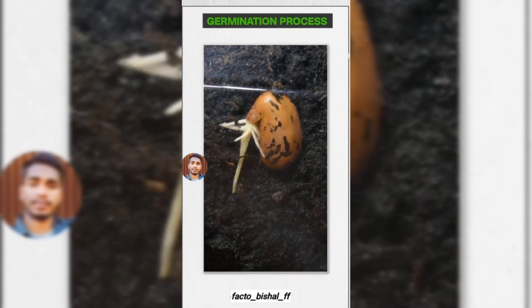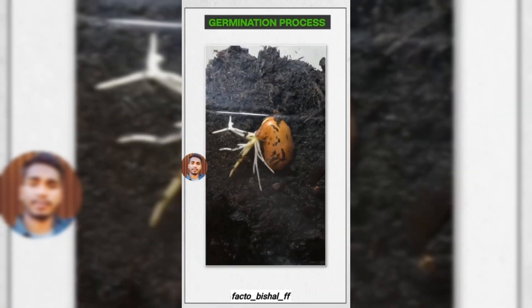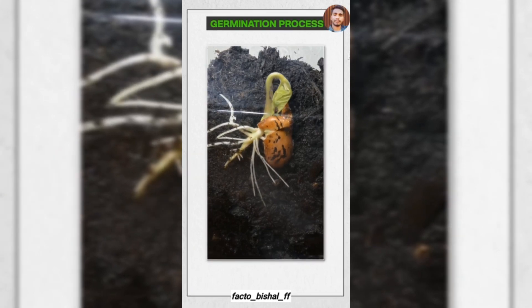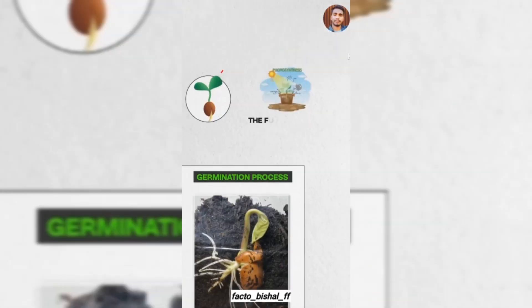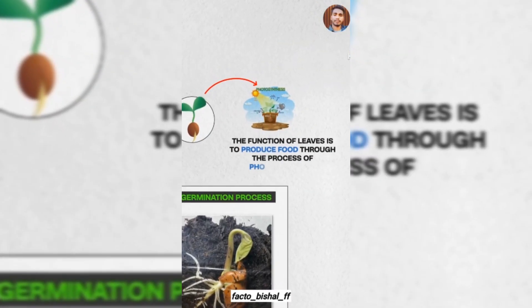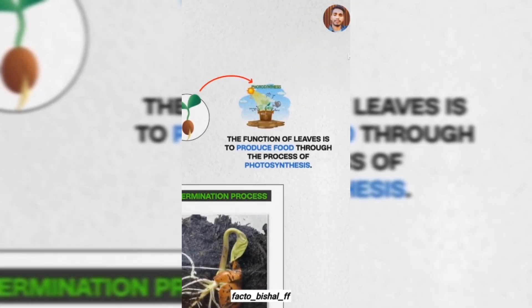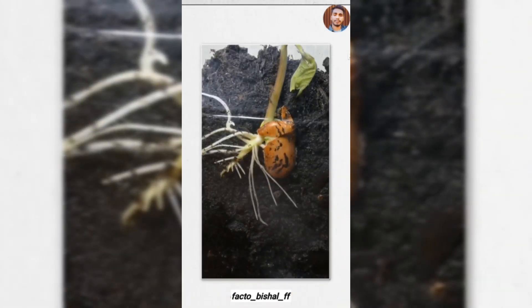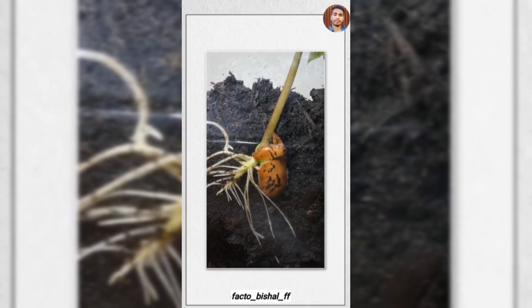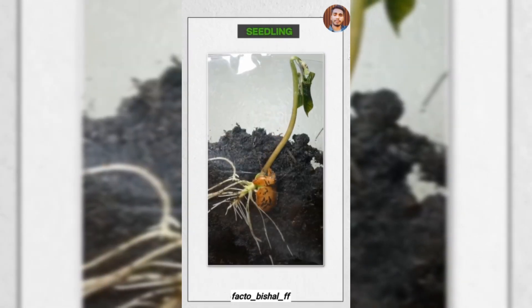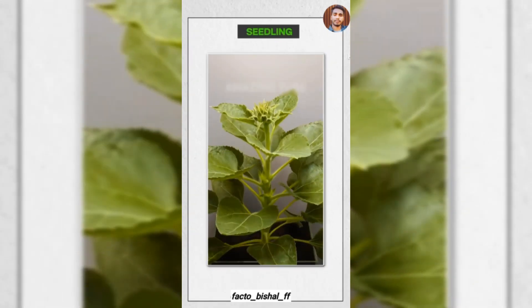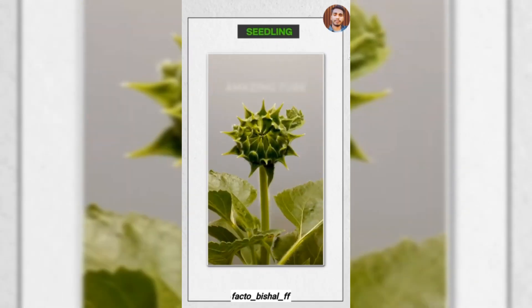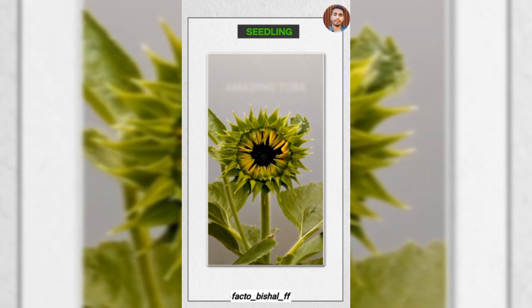Then the process of germination begins. First, the protective covering breaks open and leaves and roots start to grow. The leaves produce food through photosynthesis, and the roots absorb water and nutrients. When the seedling first emerges from the soil, it is called a seedling.